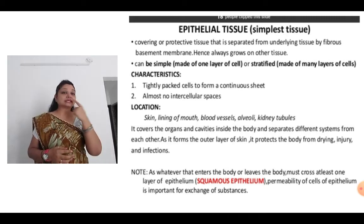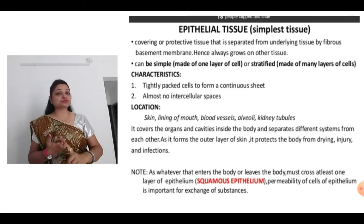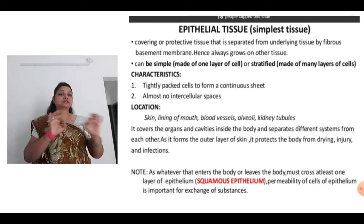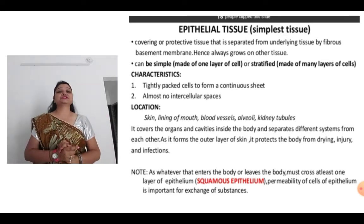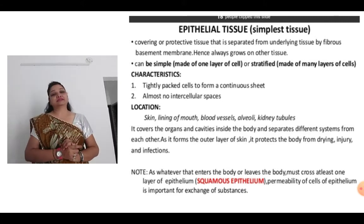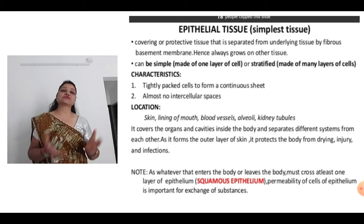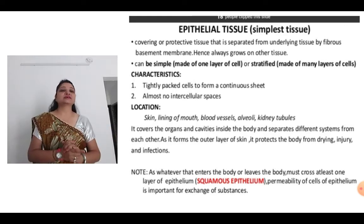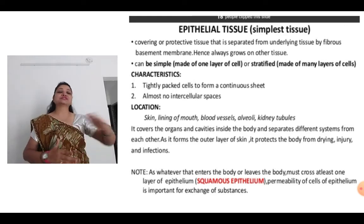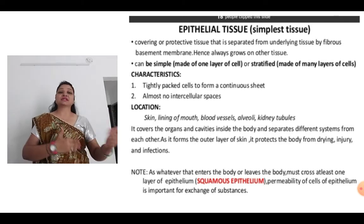Skin, lining of mouth, blood vessels, alveoli, kidney tubules — everywhere here epithelial tissue is found. It covers the organs and the cavities inside the body, and separates the different systems from each other. That is why this tissue is there — because of this layer the systems are separated.